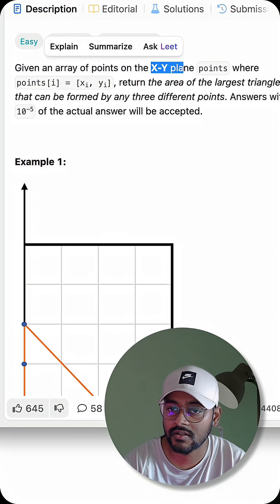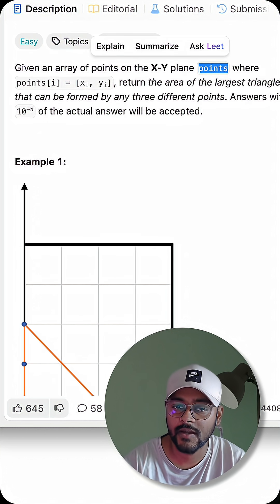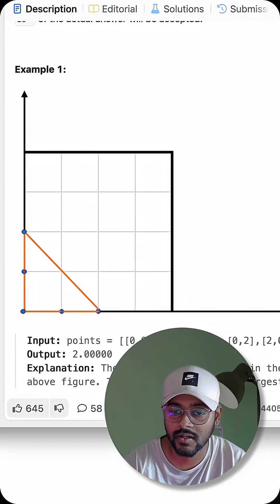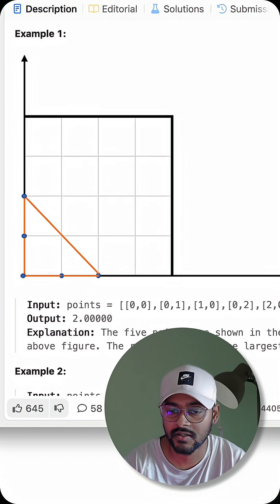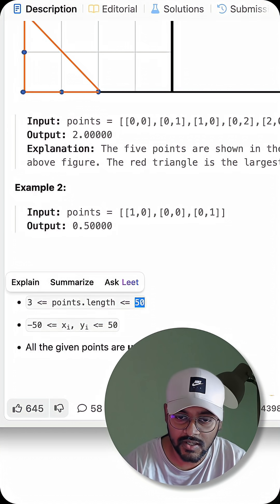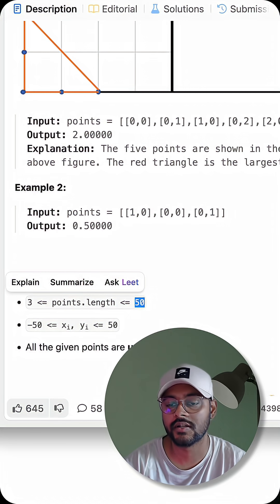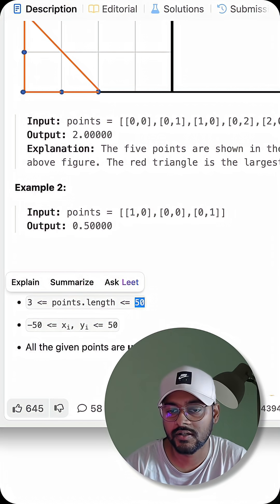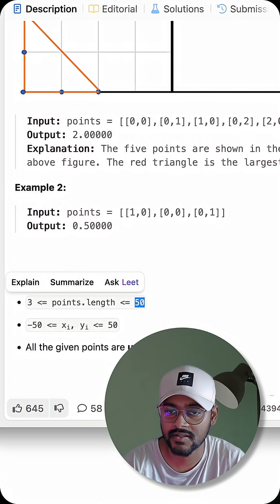Here we are given an XY plane with some points over it and we have to use those points to form a triangle with largest area. Upon seeing the constraints I saw that the points are limited in number so we can go ahead checking every single possibility in this case.